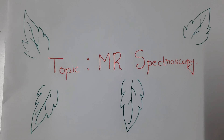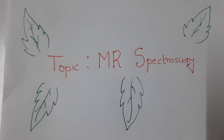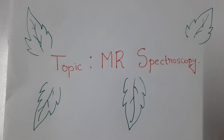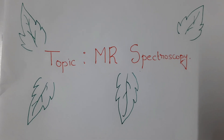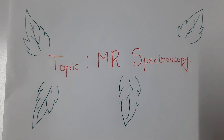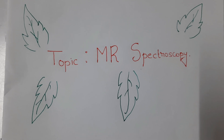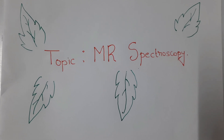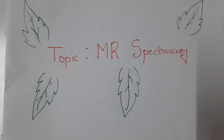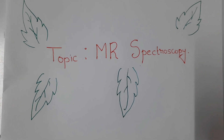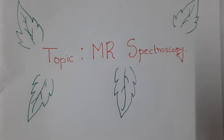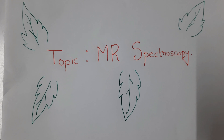Hello friends, welcome to the video. In this video we are going to discuss about what is magnetic resonance spectroscopy or what is MR spectroscopy. MR spectroscopy is a procedure that involves the measurement of brain chemistry. In normal MRI scanning, we acquire anatomical images of the brain tissue, whereas in MR spectroscopy, we acquire a graphical representation of the brain chemistry or we try to acquire the concentration of the metabolites present in the human brain.